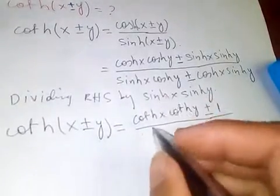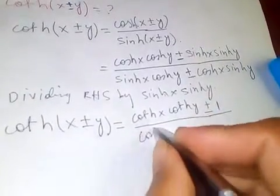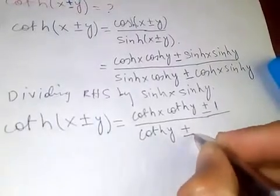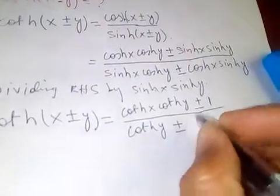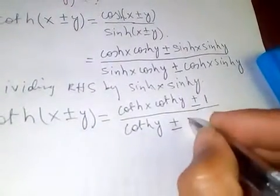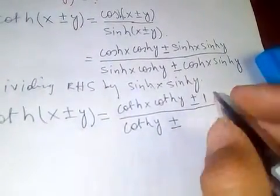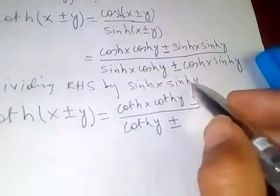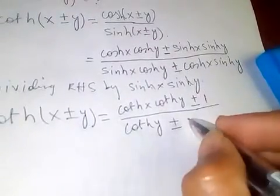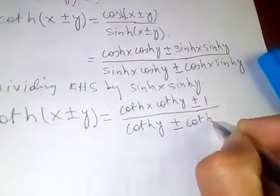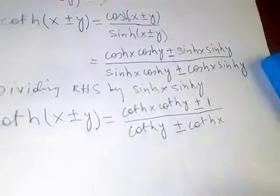...and on the denominator, dividing through, we can show it becomes coth(y) plus/minus coth(x). So the final result is coth(x ± y) = [coth(x)coth(y) ± 1] / [coth(y) ± coth(x)].